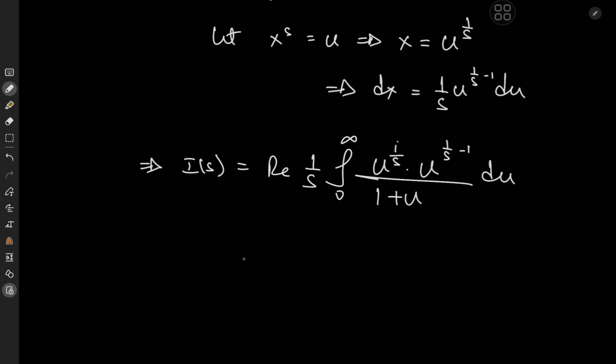Okay, so we have this integral. Let me just perform some simplifications. We have the real part of 1 by s times the integral from 0 to infinity of u to the 1 plus i by s minus 1 du divided by 1 plus u.